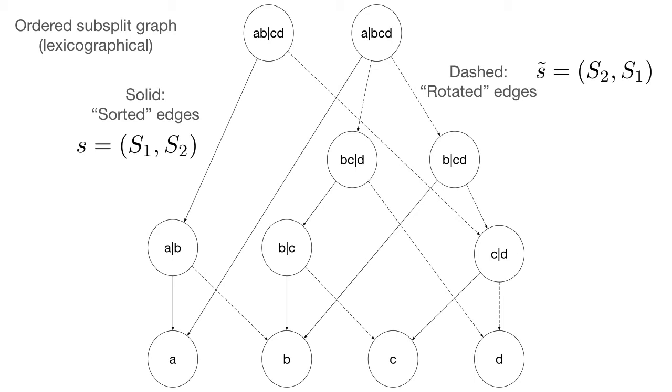So there are two types of edges in this graph. Sorted edges represented in solid lines and rotated edges in dashed lines. So in the figure, you can think of the sorted edge as connecting a parent subsplit to a child subsplit such that the child splits the clade on the left of the vertical bar. Or a more complicated way to think about this is rotated edges connect a parent subsplit to a child subsplit that splits the left side of the vertical bar after you rotate the parent subsplit.